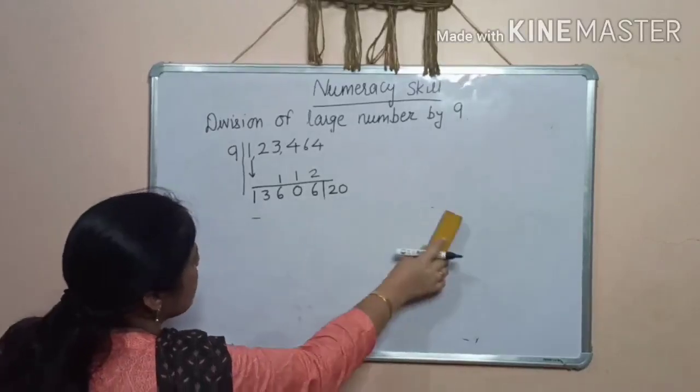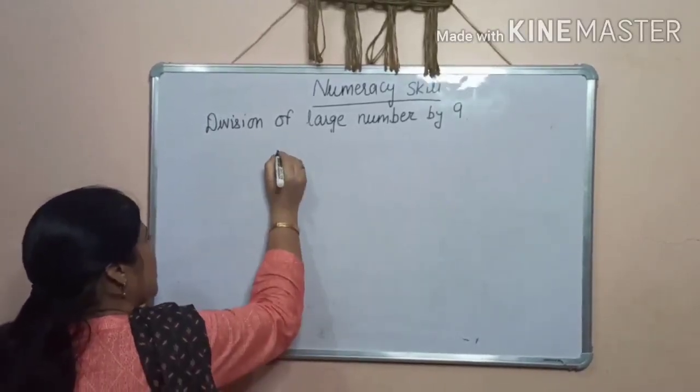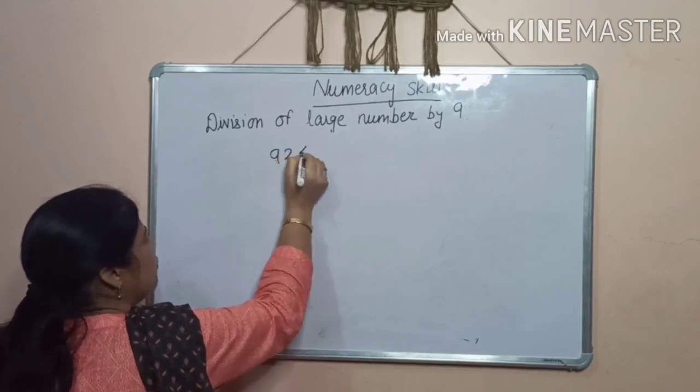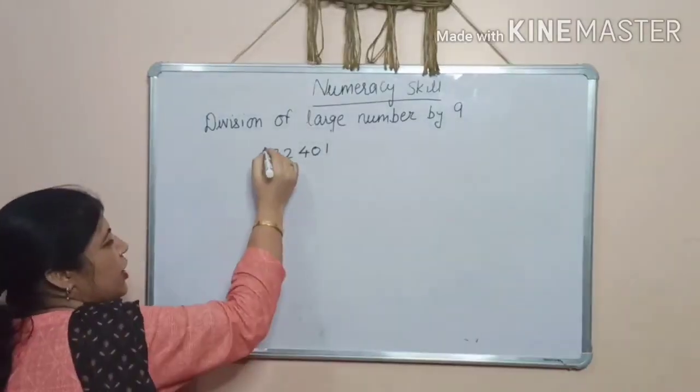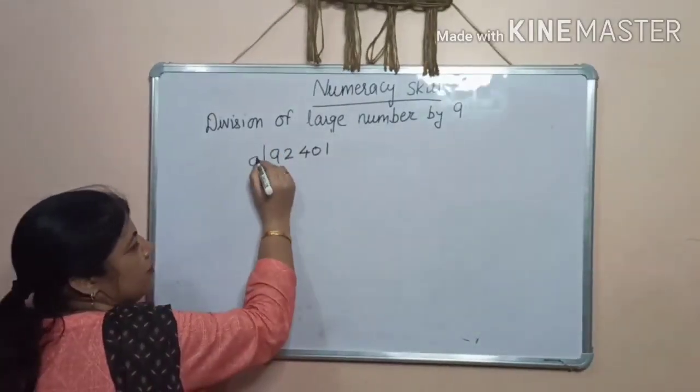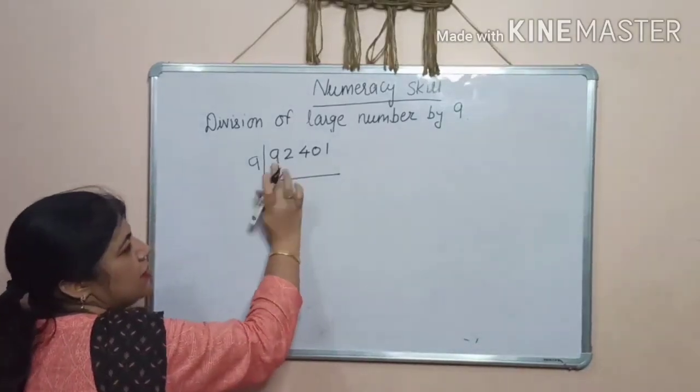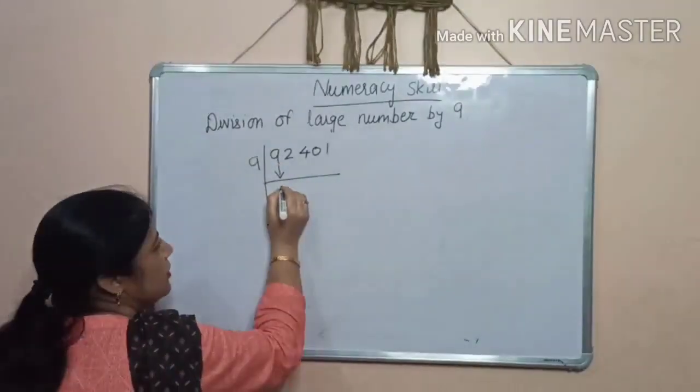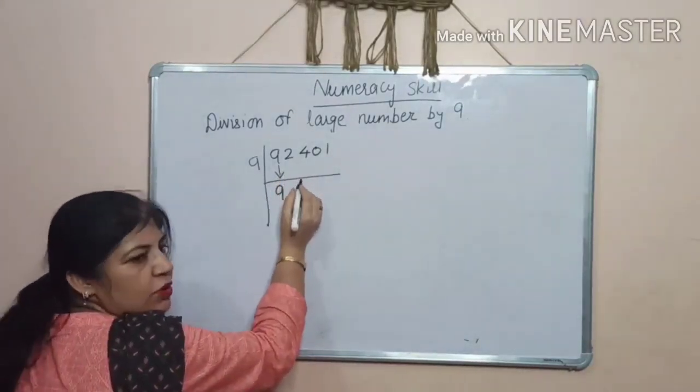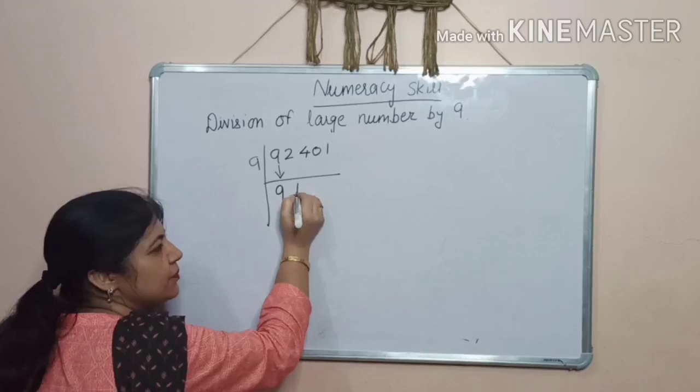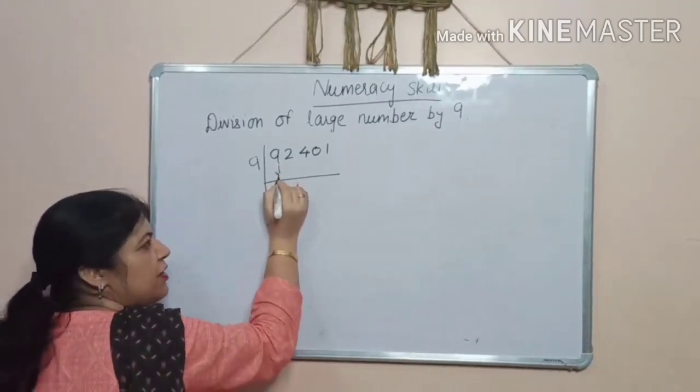Now, I am taking one more example. 92,401. Now, divide it by 9. First step, you know very well. As it is. And 9 and 2? 11. Now, we can't write 11 here. So, 1 will come here.